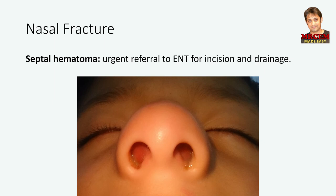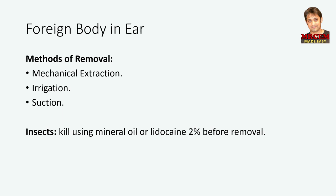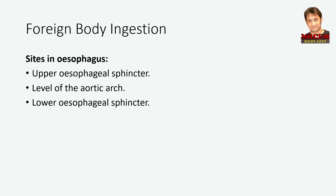Let's talk about foreign bodies in ENT, starting with foreign body in the ear. The foreign body can be removed by mechanical extraction using forceps or a hook. Irrigation can also be used, but this is contraindicated for soft objects, organic matter, or seeds which may swell. Suction can also be used and is more suitable for insects, organic matter, and objects with the potential to become friable. It is important to know that insects should be killed prior to removal using mineral oil or lidocaine 2%. Refer the patient to ENT if there is tympanic membrane perforation, contact of a foreign body with the tympanic membrane, incomplete visualization of the auditory canal, or if button batteries or hearing aid batteries are involved.